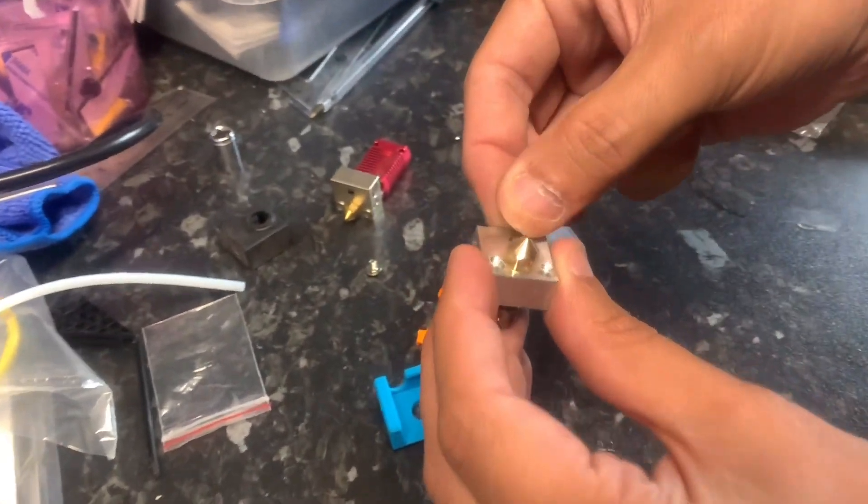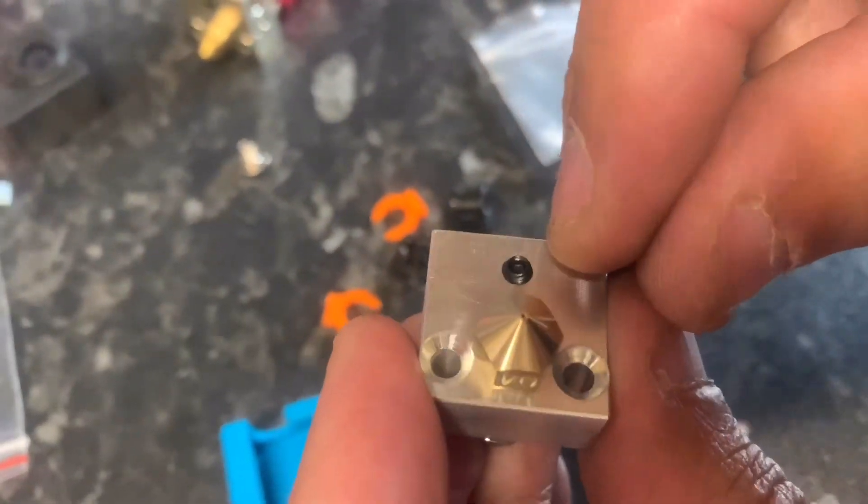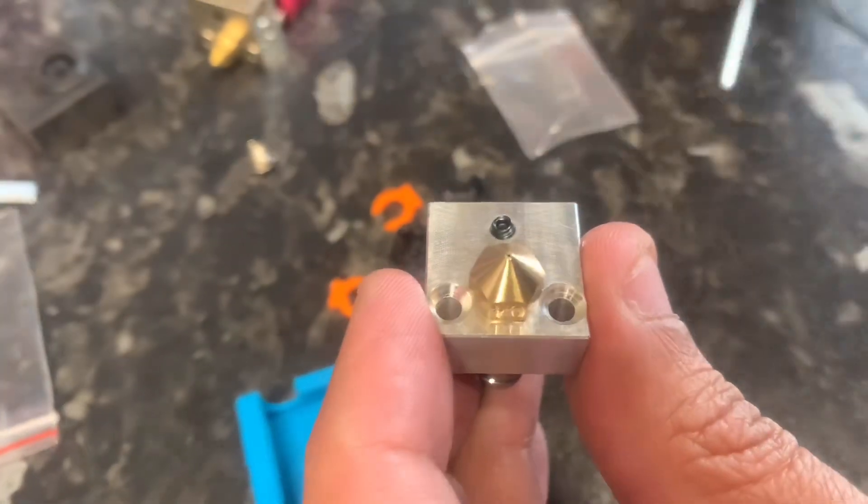So what we need to do now is get the little grub screw and just screw it in with the allen key. But don't screw it all the way in just yet because you want to put the cartridge in and then securely screw it in.